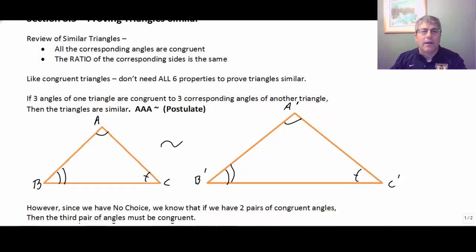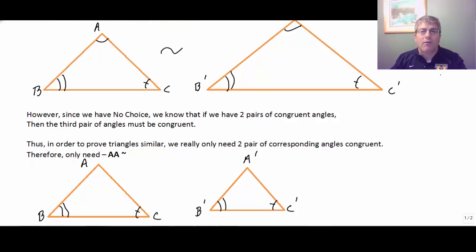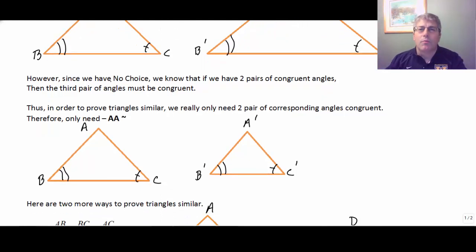However, in previous chapter, we studied that if you had two pair of corresponding angles congruent between two triangles, then the third pair was automatically congruent. So why would you need to get all three if after two the third are automatically congruent by no choice? So in reality, in order to prove triangles similar, we really only need two pair of corresponding angles congruent, but because we know by no choice the third pair is going to be congruent. So really, we only need angle, angle similarity.